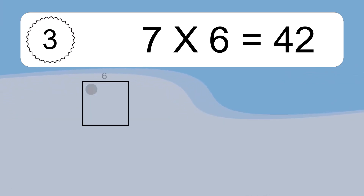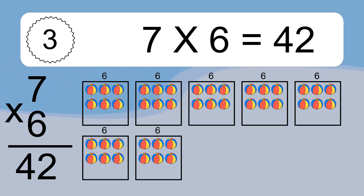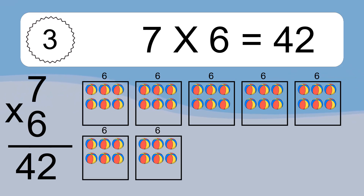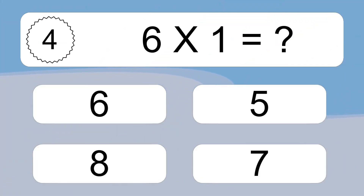7 times 6 equals what? 7 times 6 equals 42. We have 7 boxes, and each box has 6 colorful balls inside. If you count all the balls in all the boxes together, you will have 7 times 6 balls. This equals 42 balls.